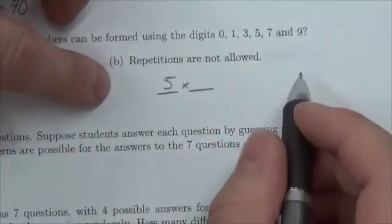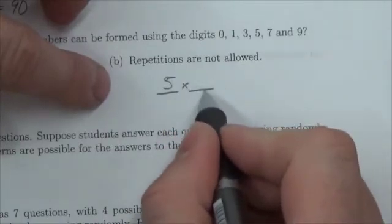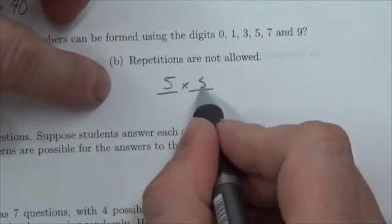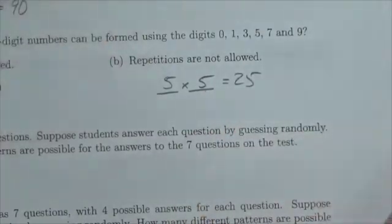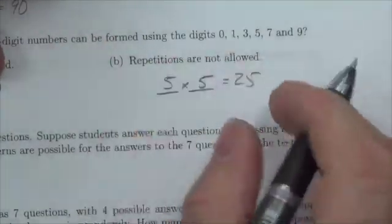So there were six numbers. There's only one number this one can't be, whatever this one is, so that leaves me with five options right there. So there are 25 different numbers that I can create with those digits if repetition is not allowed.